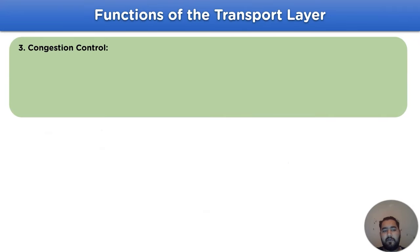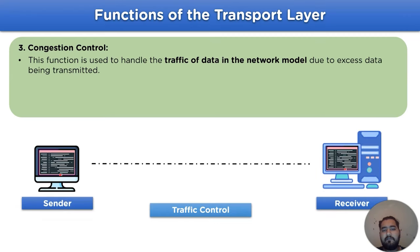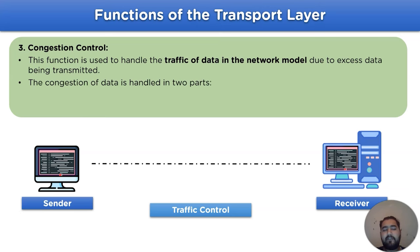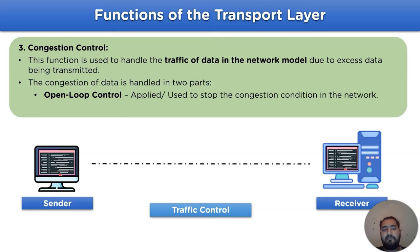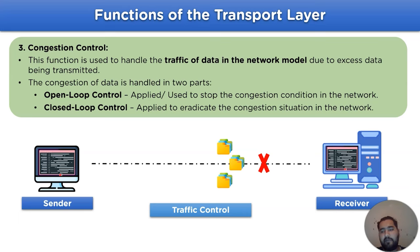The next function is congestion control, which is used to handle traffic of data in the network model arising due to excess data being transmitted over the network channel. Congestion control is handled in two parts: open loop control, which is applied to stop congestion conditions in the network channel, and closed loop control, which is applied to eradicate the congestion situation in the network model.